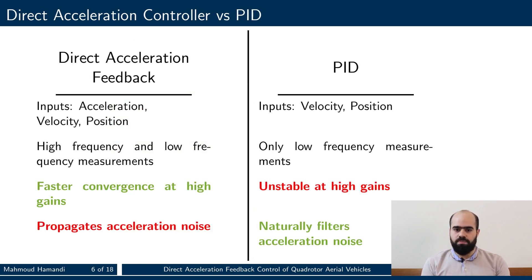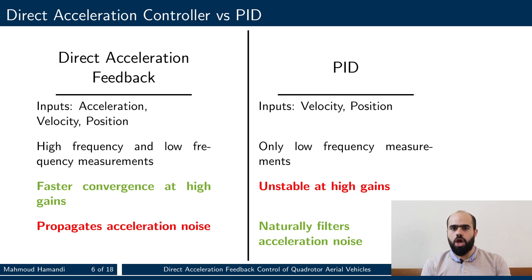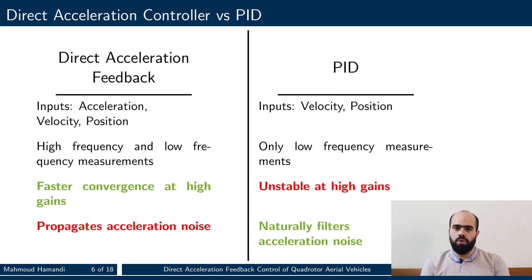Our controller can be reformulated as a PID controller. However, the difference between the direct acceleration controller and the PID is in their inputs, where the direct acceleration controller uses acceleration measurements in addition to position and velocity. The acceleration measurement is usually a high-frequency measurement as opposed to the position and velocity measurements. We showed in our paper that since the controller uses high-frequency measurements in addition to low-frequency measurements, we can increase the controller gains without losing stability, while the PID cannot do so. On the other hand, the position and velocity measurements naturally damp the noise in the acceleration, while the direct acceleration controller requires the use of IMU measurements directly even with their noise. As such, we had to introduce a new IMU filter for this task.